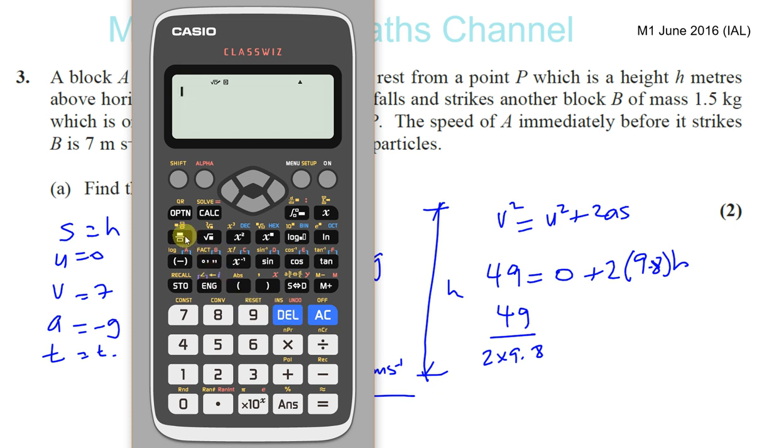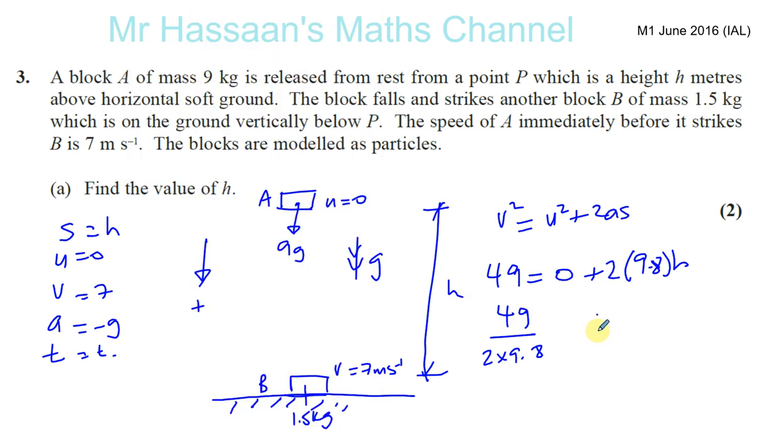So 49 divided by 2 times 9.8. Let's hit 2.5. 2.5 meters.